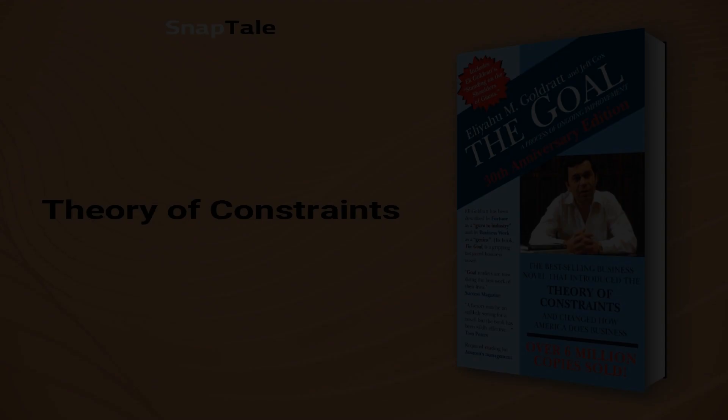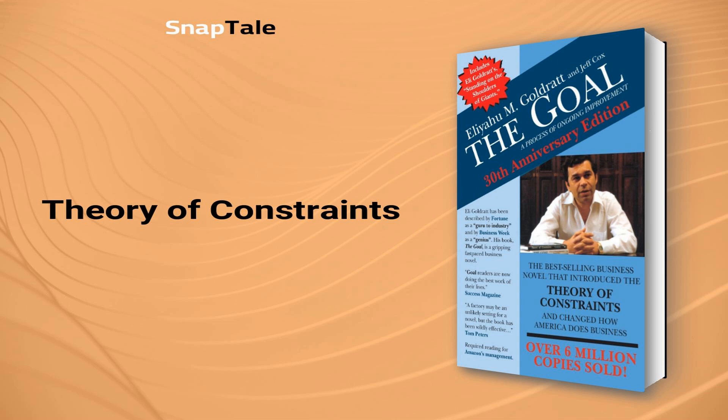Theory of Constraints. Israeli physicist Eliyahu M. Goldratt's book, The Goal, is a business classic and bestseller that uses a novel to explain his theory of constraints. Goldratt combines physics, process engineering, cost accounting, and ancient Greek philosophy to present practical advice. Through his protagonist's journey, Goldratt shows how applying the theory of constraints can overcome challenges and improve business operations.